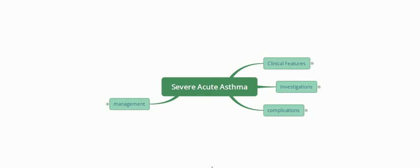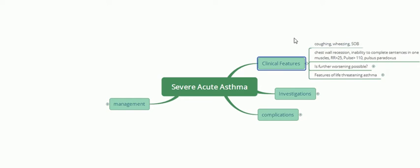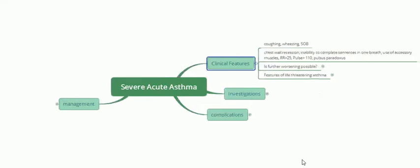Severe acute asthma is an emergency. It can be seen in patients who have a previous history of asthma. To recognize a patient with severe acute asthma, we look at the clinical features. The patient presents with coughing, wheezing, and shortness of breath. The most important being shortness of breath and wheezing, which you can hear, making the patient extremely uneasy.